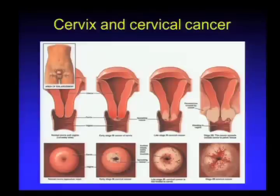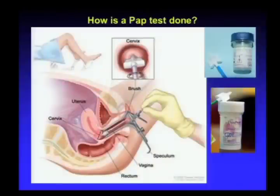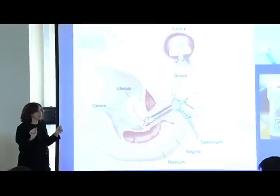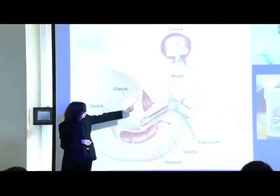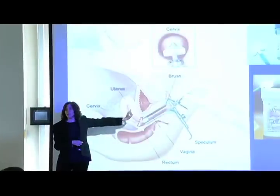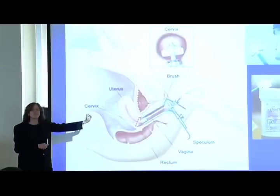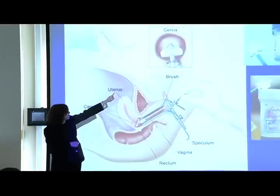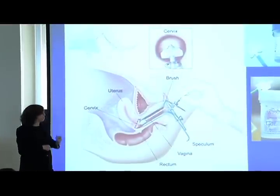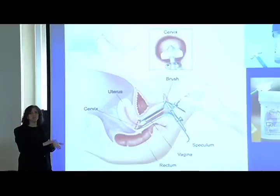This shows normal cervix and vagina progressing towards cancer. When we do a speculum exam—which is how a pap test is done—the woman typically lies on her back with feet in stirrups, sometimes covered with potholders so your feet don't get cold. We insert a speculum, and we use a device called a broom to take a scraping of cells.